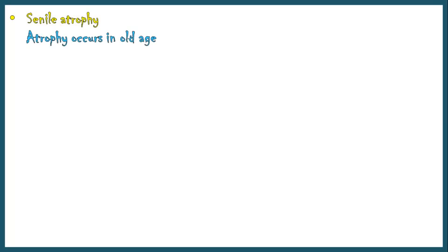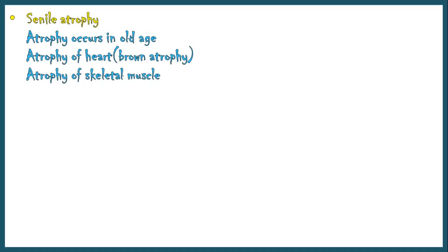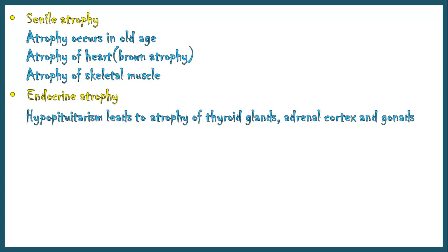Senile atrophy is the type of atrophy that occurs in old age. The heart muscle undergoes atrophy and becomes brown in color, known as brown atrophy of the heart. Skeletal muscle also undergoes atrophy in this condition. Loss of endocrine stimulation can also cause generalized atrophy; for instance, hypopituitarism leads to atrophy of the thyroid glands, adrenal cortex, and gonads.